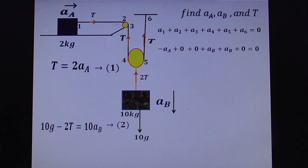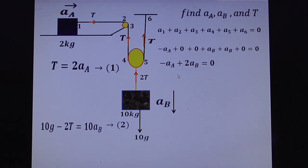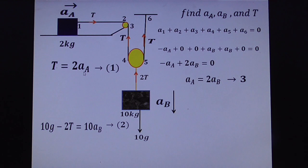Since mass A moves upward, the length at point 1 decreases, so we write −A_A. The constraint equation becomes: −A_A + A_B + A_B = 0, which gives −A_A + 2A_B = 0, so A_A = 2A_B. This is equation number three. Substituting into equation one: T = 2·A_A = 2·(2A_B) = 4A_B.